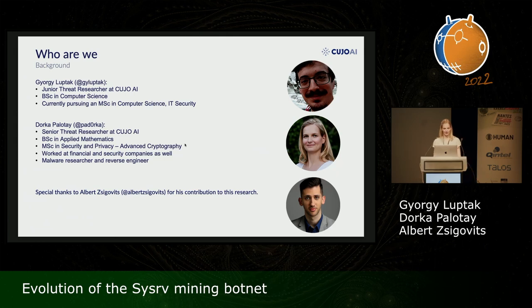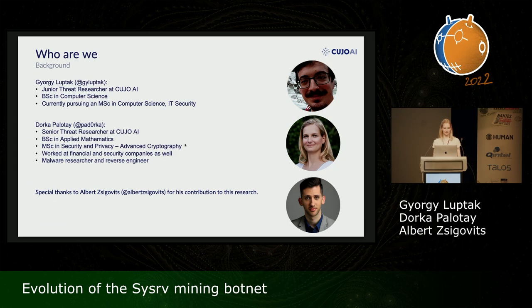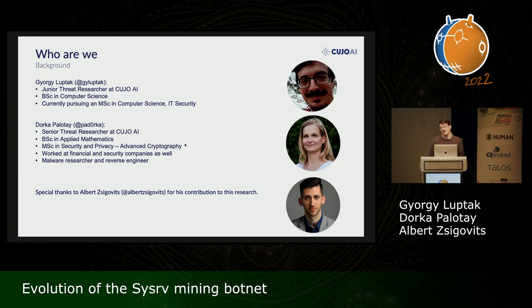Just a few words about who we are. We both work at Kujo AI. I mainly studied mathematics and cryptography and somehow reverse engineering swooped me in because it's like solving puzzles, so I really enjoy doing these kind of things. I also would like to thank Albert Zsigovic whose work was helping us in the research in the beginning. And now I will give the floor to Yuri. He will start the presentation and then I will continue. I'm Gyorlop Tak and I'm a junior threat researcher at Kujo AI. I started last September and I have a bachelor's degree in computer science and I'm currently pursuing a master's in computer science and IT security at a local university in Hungary, Budapest.